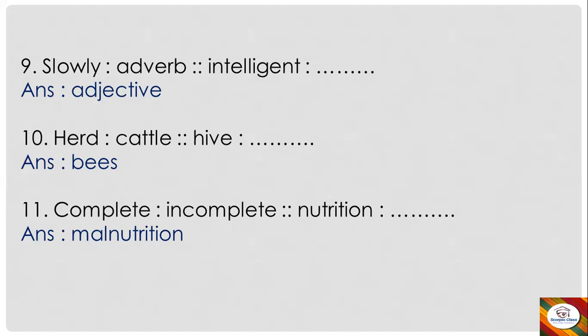Next: 'complete' is to 'incomplete' as 'nutrition' is to dash. Here we have opposites. 'Nutrition's' opposite is 'malnutrition'. So: 'complete' is to 'incomplete' as 'nutrition' is to 'malnutrition'.